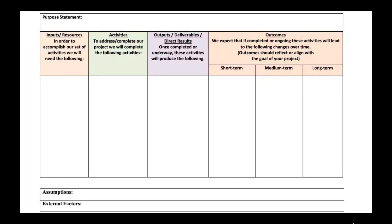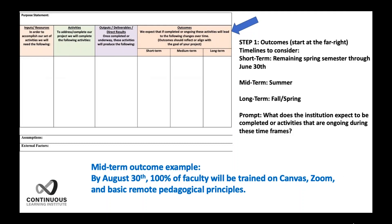We're going to use this logic model template to think about our plan to remain virtual. Similar to the headache example, we start from right to left. The outcomes are divided into short-term, mid-term, and long-term. Short-term could be the remaining spring semester through June 30th; mid-term could be summer; and long-term, fall and spring. The prompt is: what does the institution expect to be completed or have as ongoing activities during these time frames?